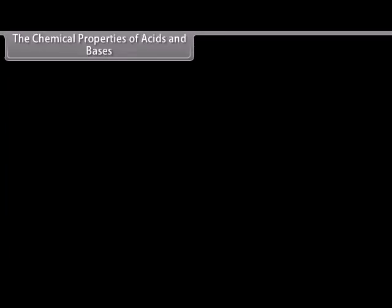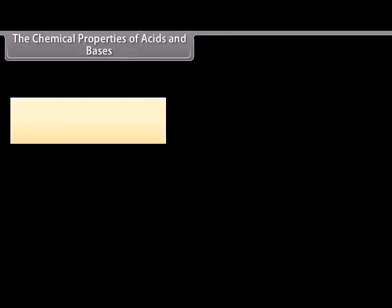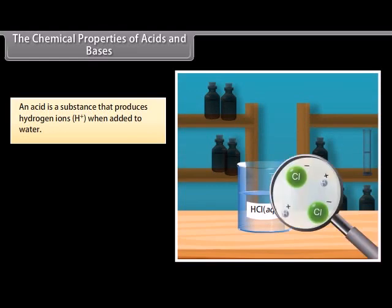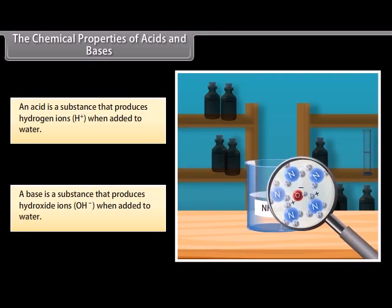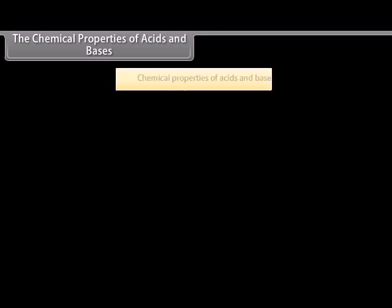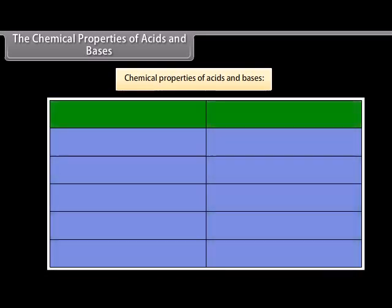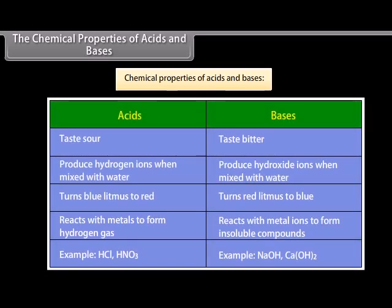The chemical properties of acids and bases. An acid is a substance that produces hydrogen ions when added to water, whereas a base is a substance that produces hydroxide ions when added to water. Both acids and bases have different chemical properties. Let us look at their properties.